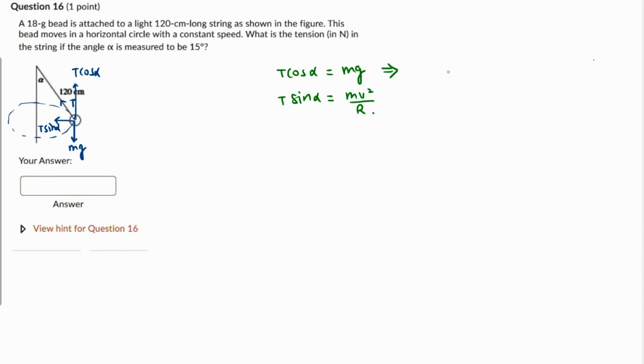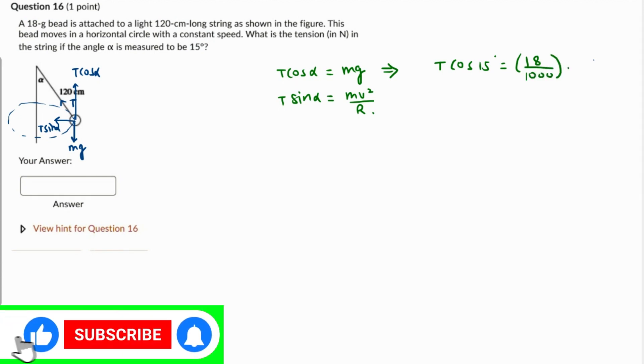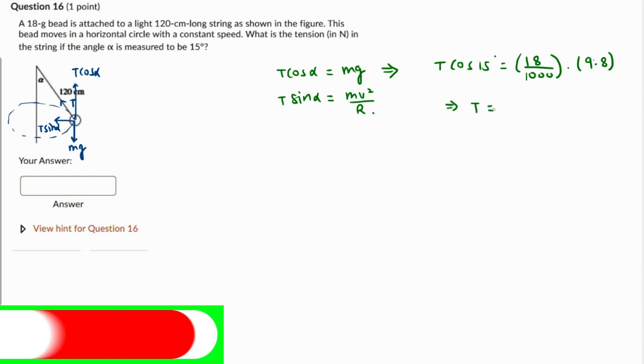From just the first equation we can get the value of the tension because T times cosine of 15 degrees is going to be mg, where m is 18 grams, 18 over 1000 kilograms, times the value of g which is 9.8 meters per second squared. So the value of tension from here...